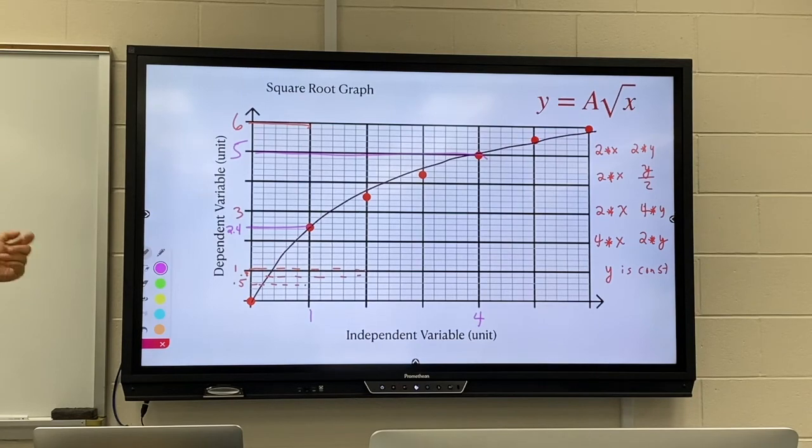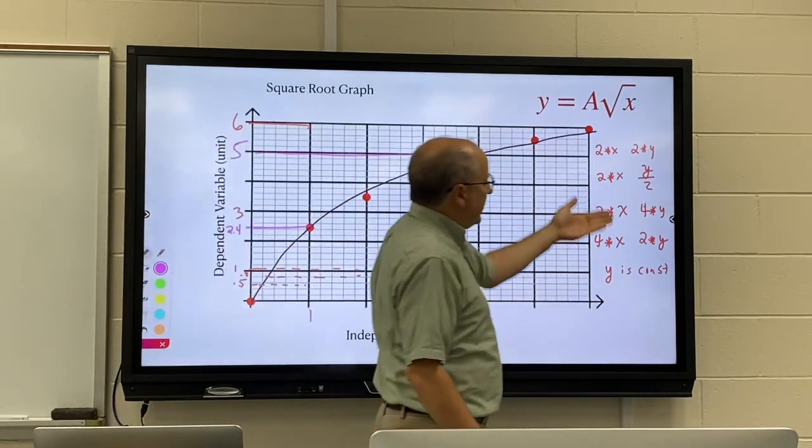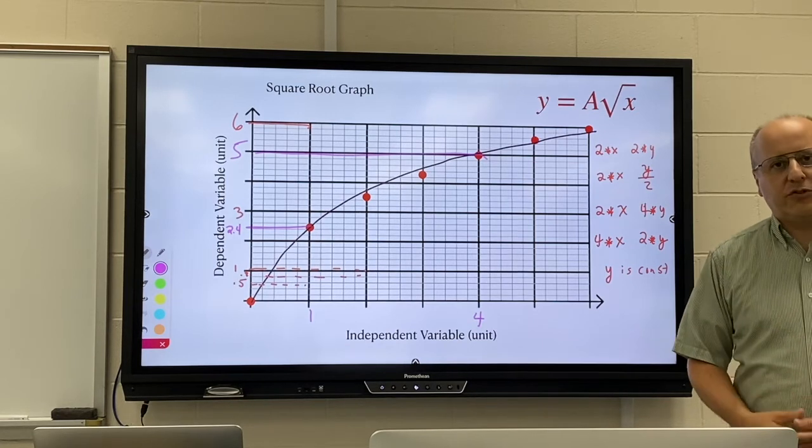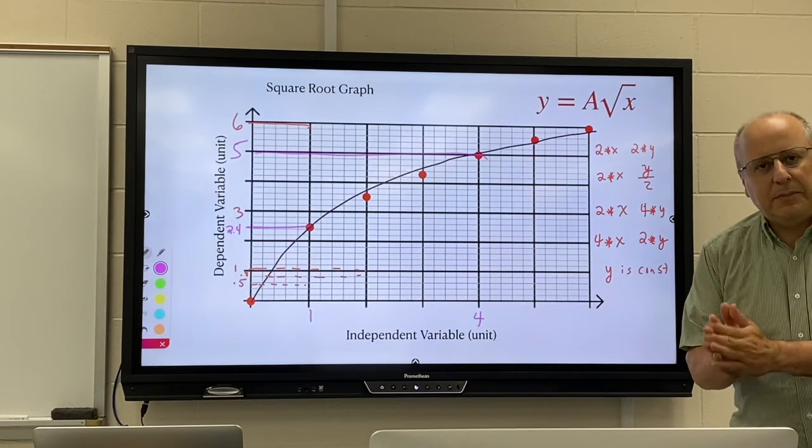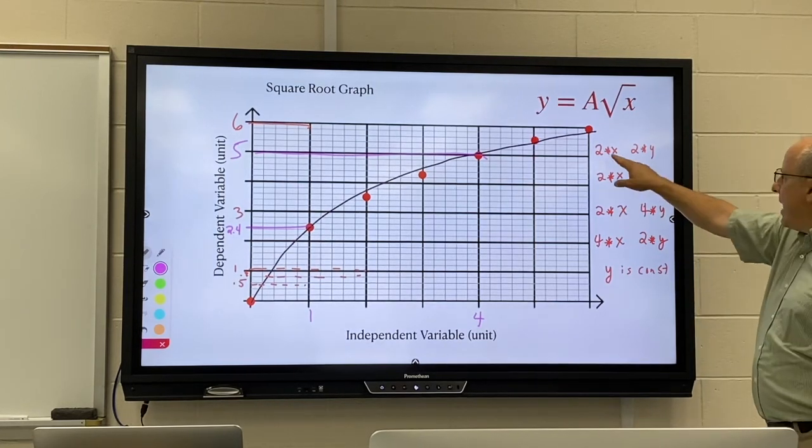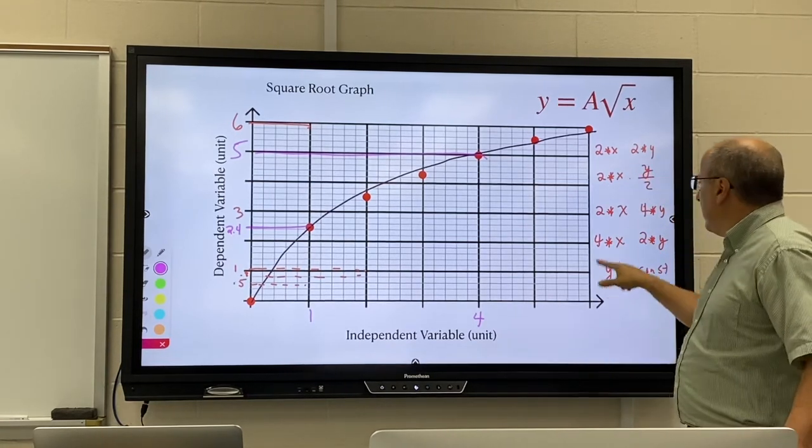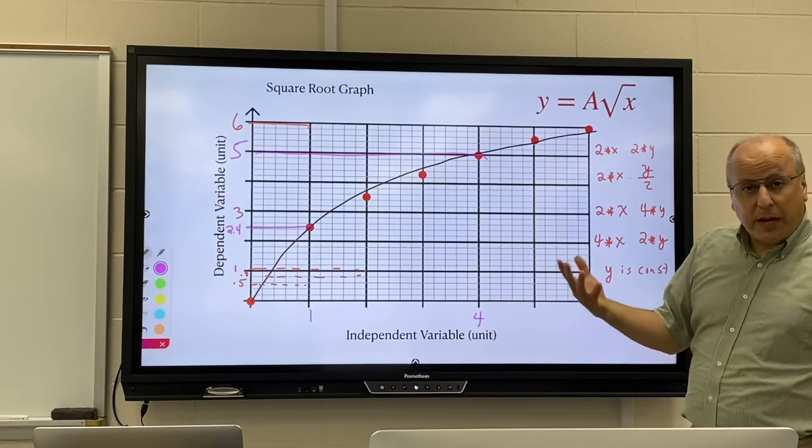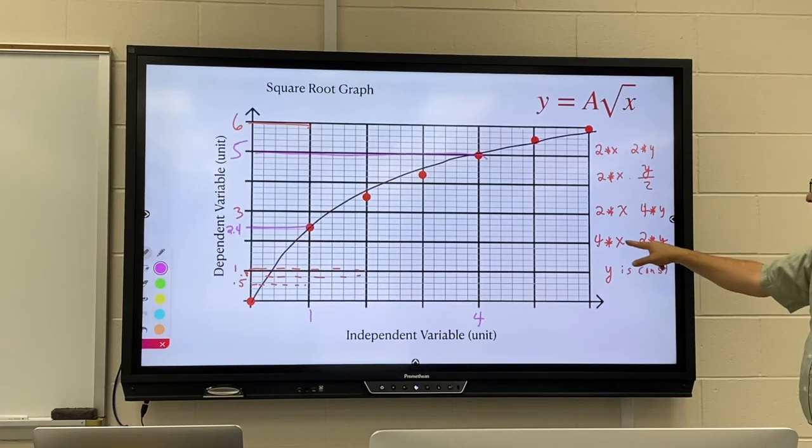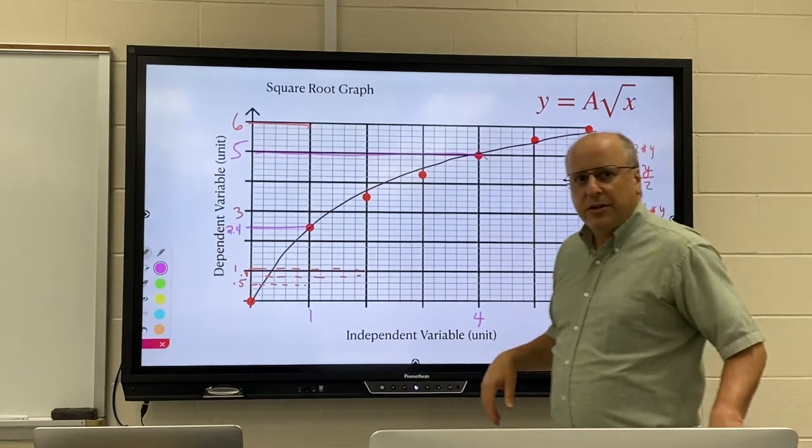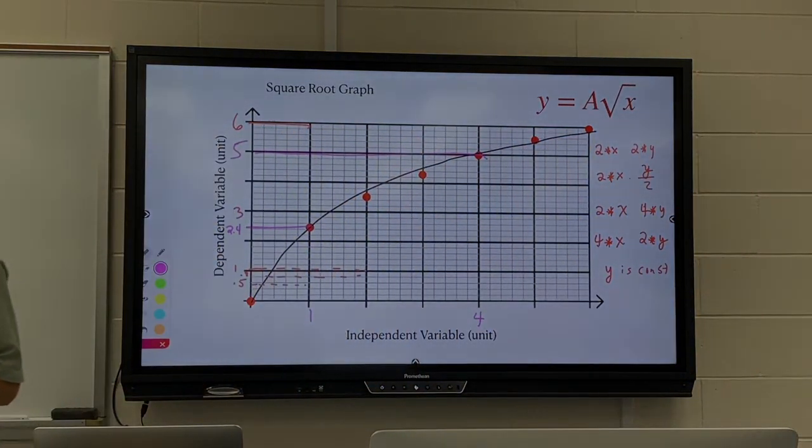So I hope that explains what I meant by these, but this is the most important thing with all of these graphs - what does it actually mean? Doubling X doubles Y, doubling X cuts your Y in half, doubling your X gives you four times as much, four times your X gives you only twice as much. Okay, so these are your graph types.